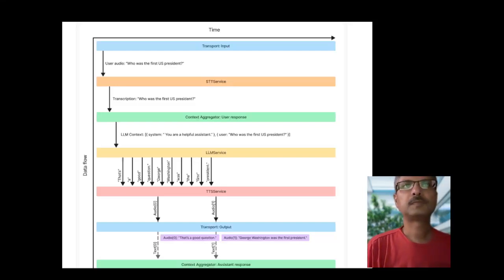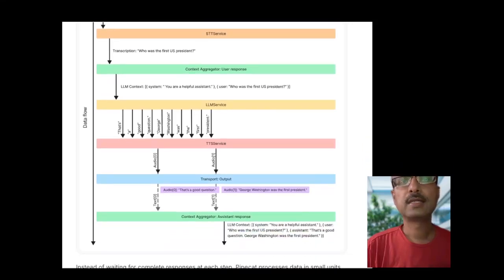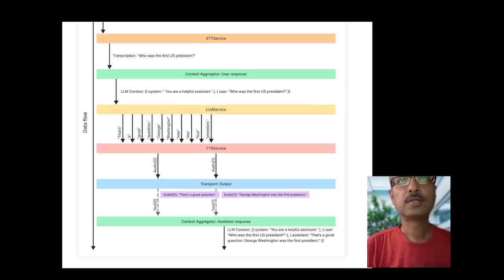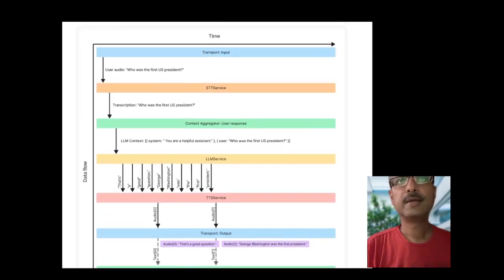And then the LLM produces an answer to it. That's a good question, George Washington. That goes into TTS service, which produces audio after every sentence, for example. And the text also goes to a context aggregator, which gets added to the LLM context, so that it displays to the user and the user can respond.